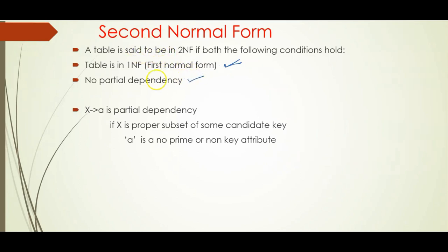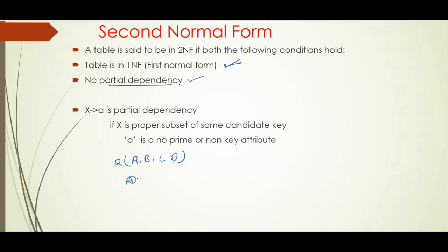Let me explain what exactly a partial dependency is in a very simple way. Assume there is a relation R containing attributes A, B, C, D. There is a functional dependency A,B → C. C is functionally dependent on A,B. Now let us observe whether it is a partial dependency or not.